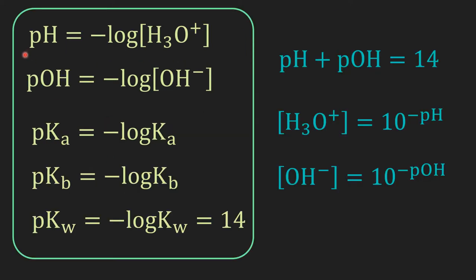So P function is just a negative log. We can apply the P function to any value: pH, pOH, pKa, pKb, pKw — we take H, OH, Ka, Kb, Kw and put negative log in front. pH equals negative log of hydronium ion or proton concentration. pOH is negative log of hydroxide. pKa is negative log of Ka. pKb is negative log of Kb. pKw is negative log of Kw, which is a constant — pKw is always equal to 14.